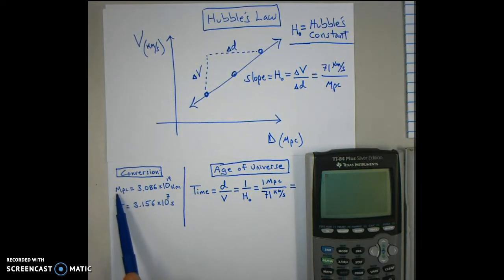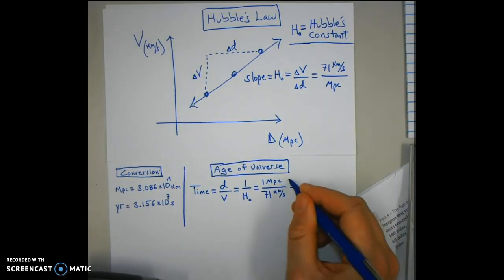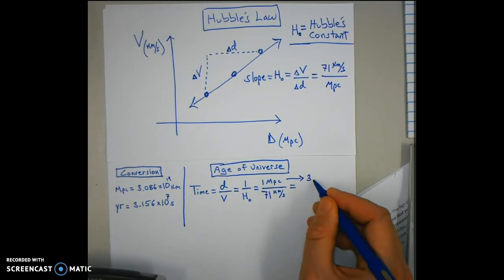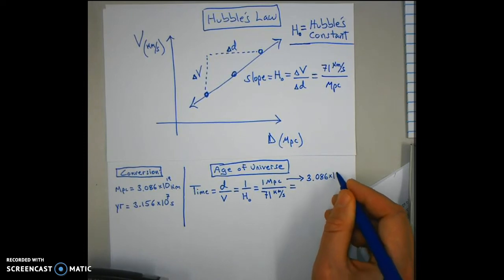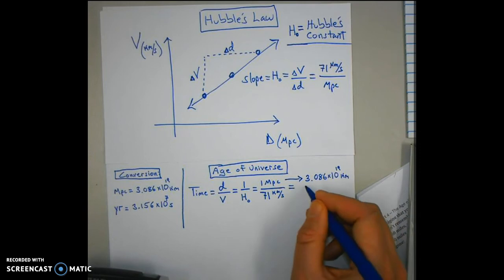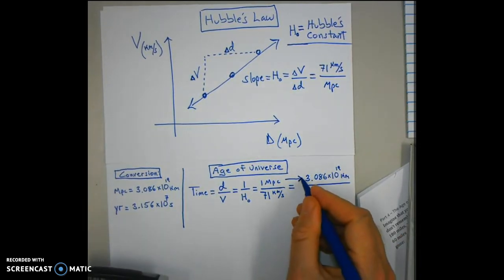Every 1 megaparsec equals this many kilometers, and there are so many seconds in a year. So first thing before we begin calculating is to draw that conversion: 3.086 times 10 to the 19th kilometers in the numerator. That'll be true for everybody, but your denominator you have to multiply your slope.